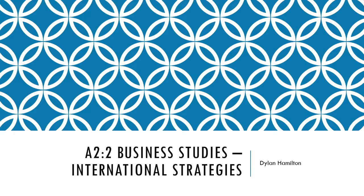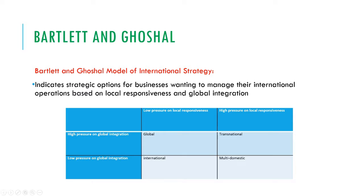We're going to talk about how businesses can use four different strategies to operate on a global scale. The Bartlett and Ghoshal model is an international strategy model — it indicates different strategic options that businesses can use to manage their international operations. The model is based on two factors: local responsiveness and global integration. High global integration with low local responsiveness gives a global strategy; low on both gives an international strategy; high on both gives a transnational strategy; and high local responsiveness with low global integration gives a multi-domestic strategy.